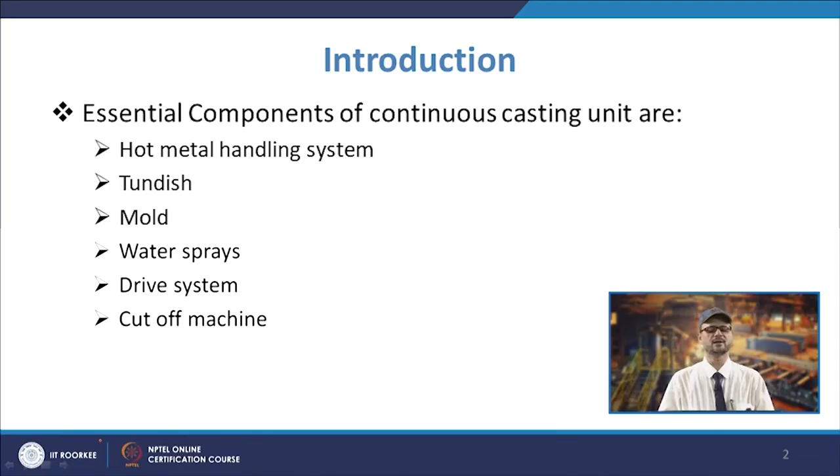Welcome to the lecture on components of continuous casting unit. We will be talking about the different essential details and components of the continuous casting unit and its significance in the continuous casting process. The following components will be covered: hot metal handling system, tundish, mold, water sprays, drive system, and cut off machine.